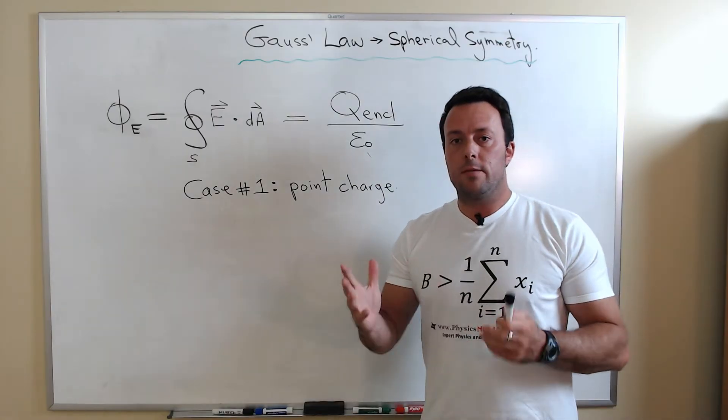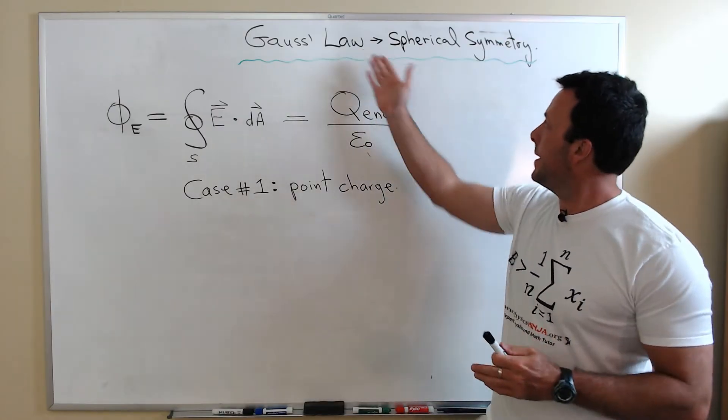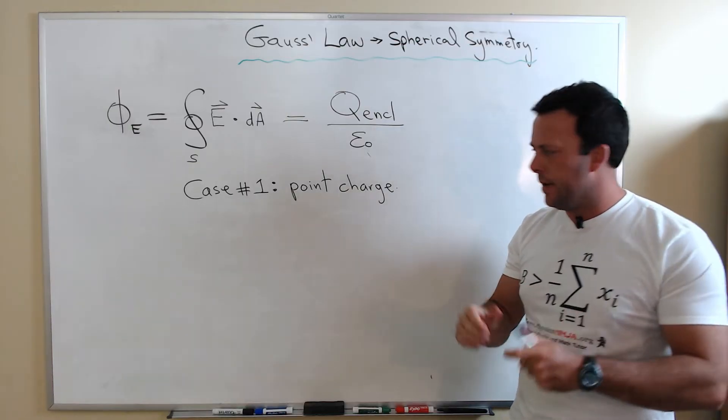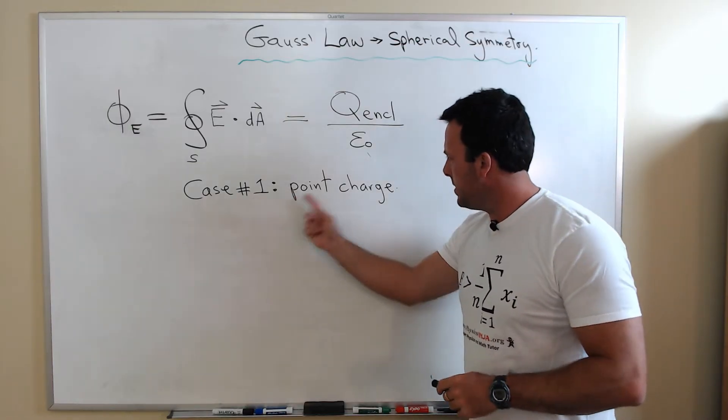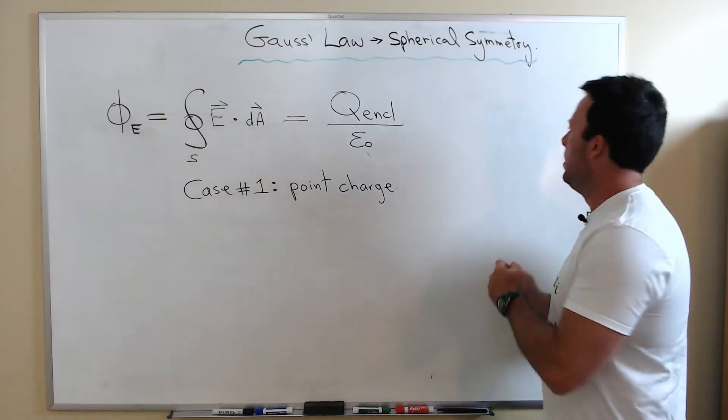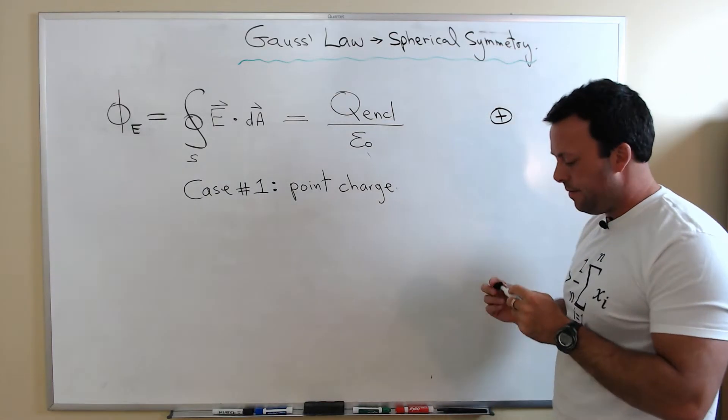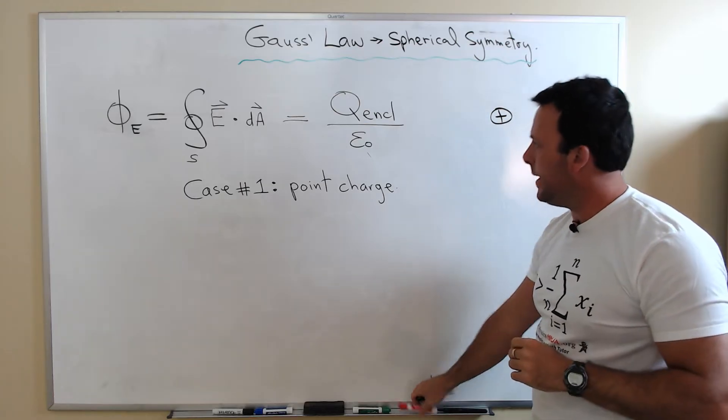I want to now solve three cases where I'm going to apply Gauss's law to problems that have spherical symmetry. The simplest possible case that you can have is a point charge, so let's consider a small point charge Q and let's just make it positive.